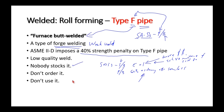Type F pipe is hard to find — if you order it, you'll be waiting a long time. It's garbage; don't use it.